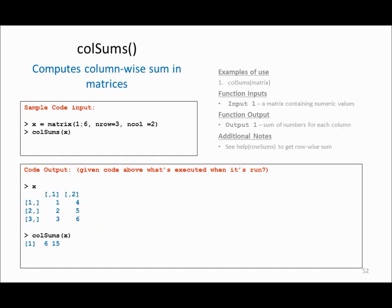colSums is a function used to calculate the sum of columns in a matrix. If I have a matrix in X and I call colSums(X), it will calculate the sum based on the columns. In this case my first column has the sum 6 and my second column has the sum 50.